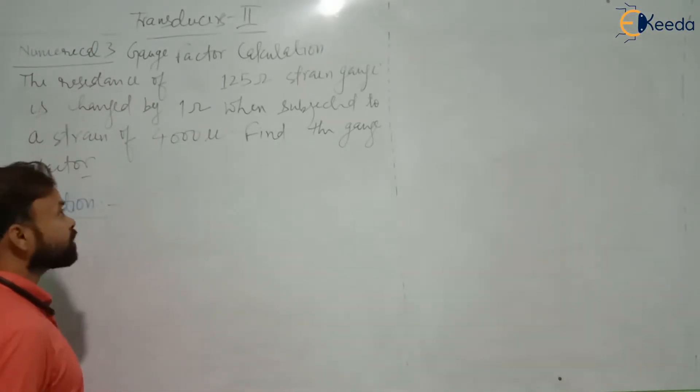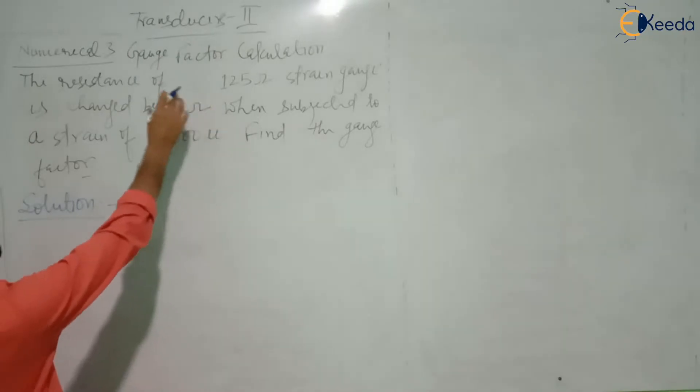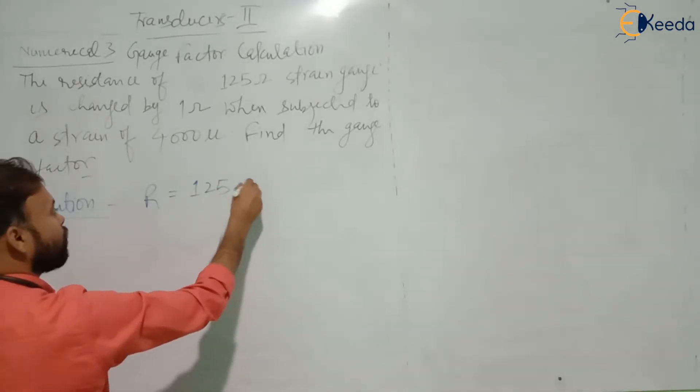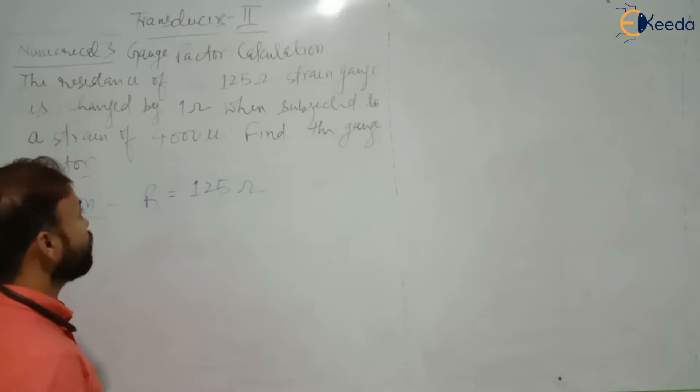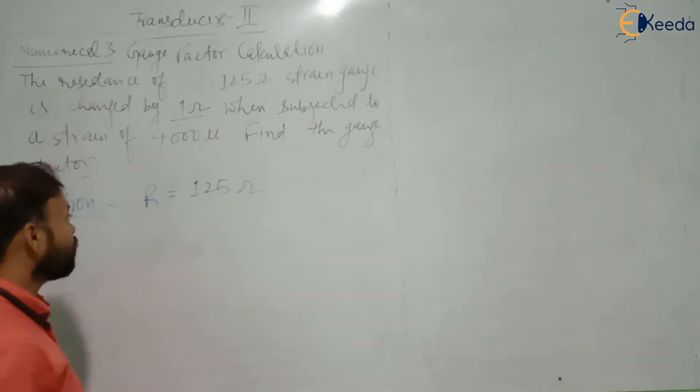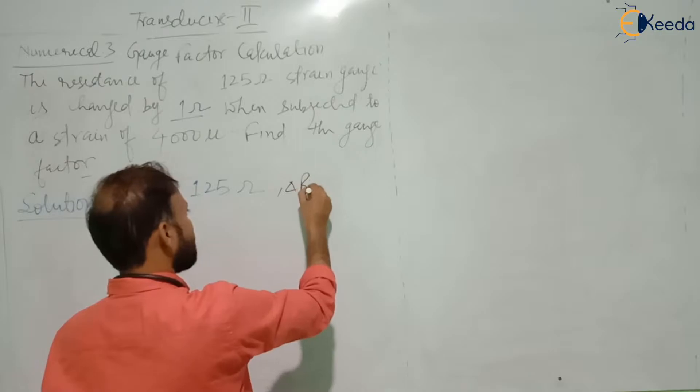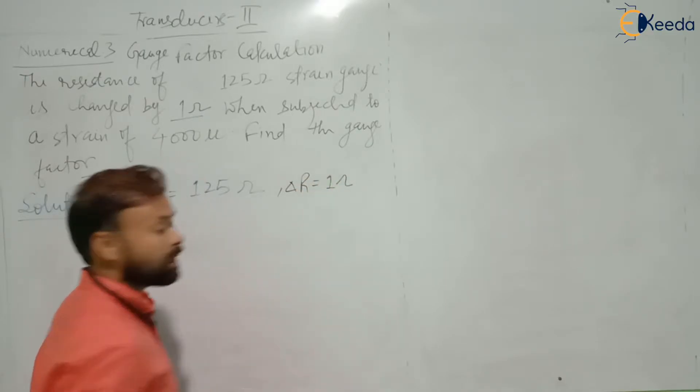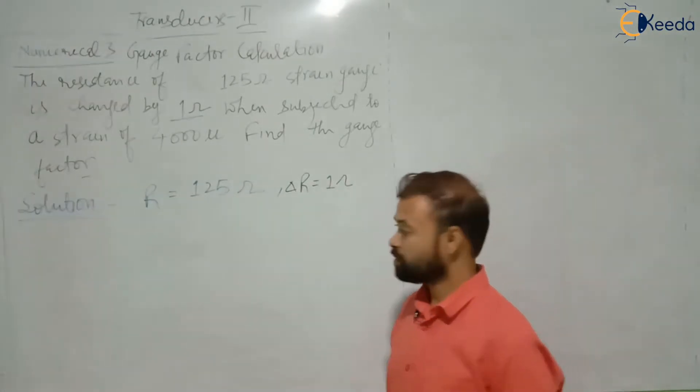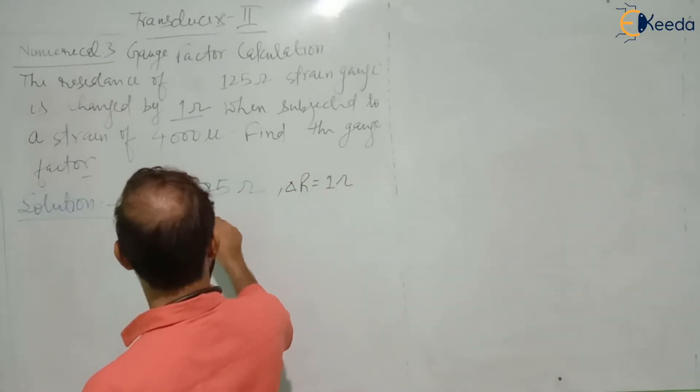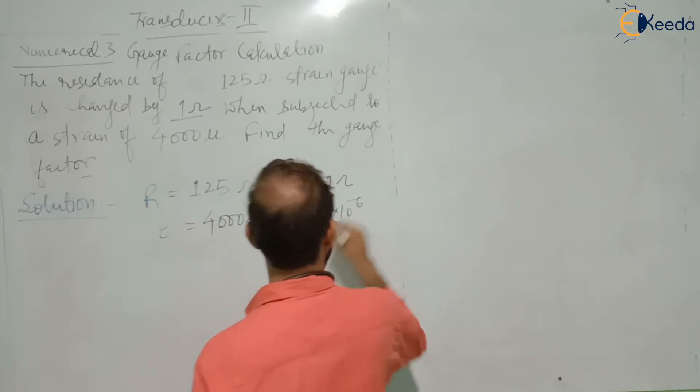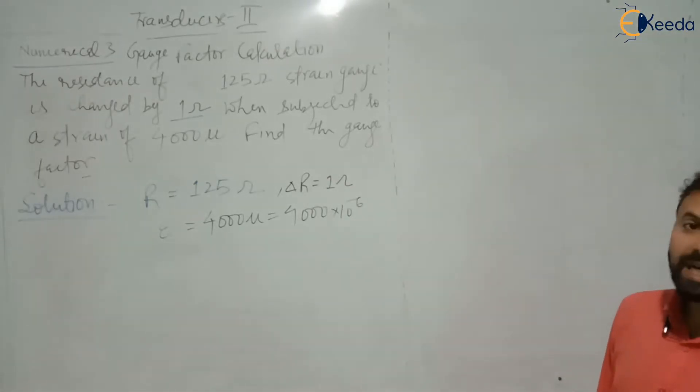So let us write the quantities which are already given in the question. Resistance of the strain gauge is given as 125 ohm, and change in resistance is 1 ohm, so delta R is equal to 1 ohm, and a strain of 4000 micron is applied. Strain means you have epsilon, epsilon is equal to 4000 micron, means 4000 into 10 to the power minus 6. Micron means 10 to the power minus 6. Find the gauge factor.